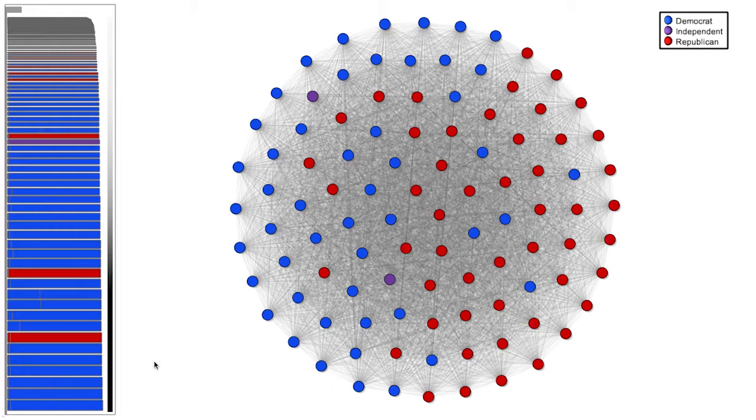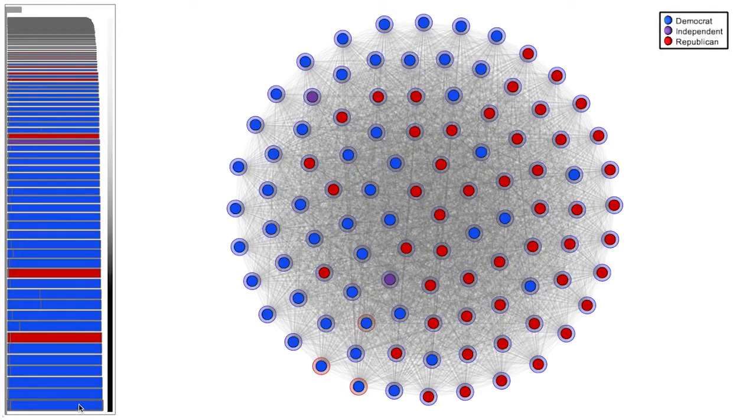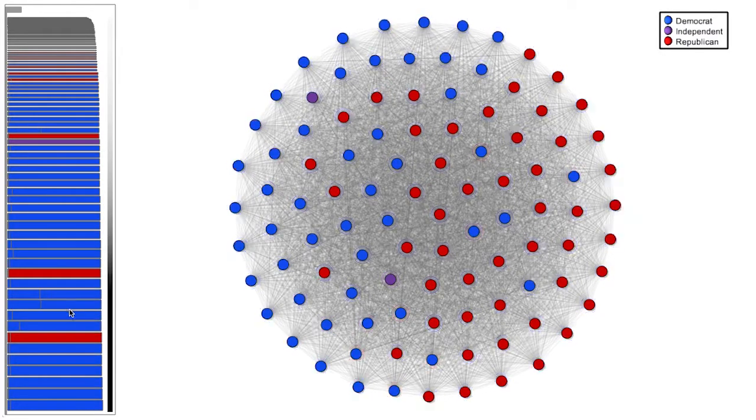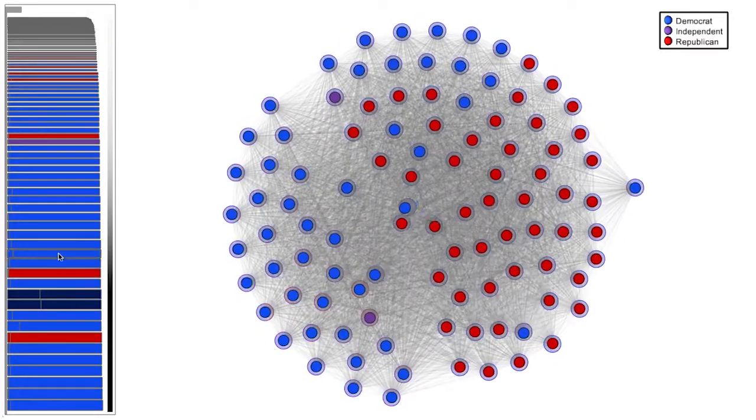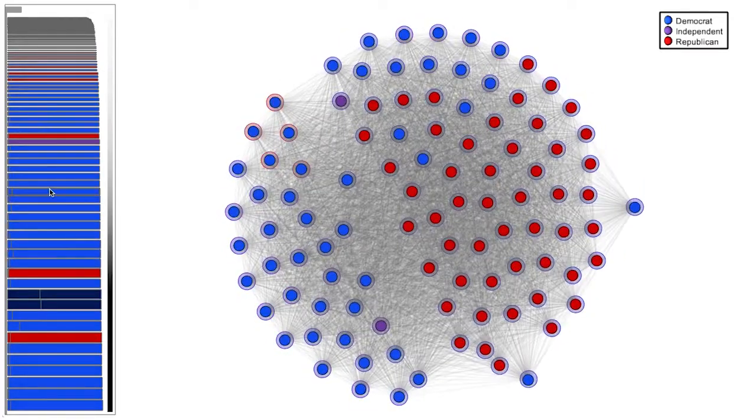We start with a Fruchterman-Reingold force-directed layout. Because the network is a complete graph, we would like to add repulsive forces to declutter. From the persistence barcode on the left, we can hover over selected bars to preview the associated feature segments in the graph.